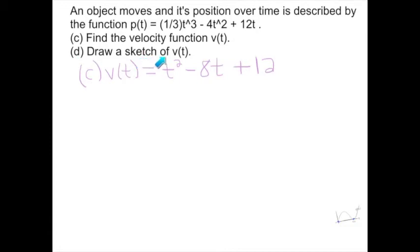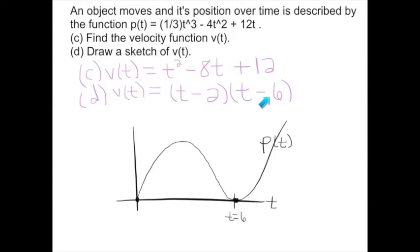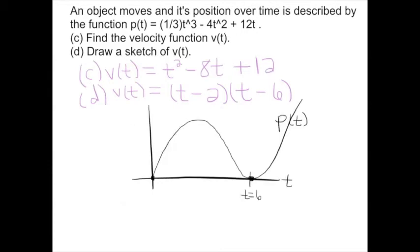Part d: let's draw a sketch of the velocity function v(t) = t² − 8t + 12. To graph it, we factor: (t − 2)(t − 6). Double-checking: t² − 2t − 6t + 12 = t² − 8t + 12. ✓ So the velocity function is a parabola that crosses the t-axis at t = 2 and t = 6. My graph is not drawn to scale, but I can refine it as I go.